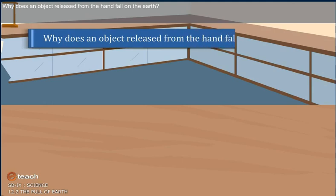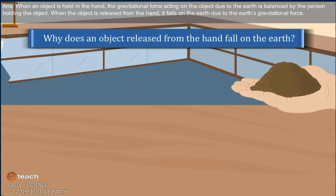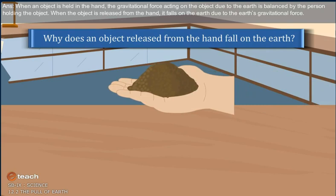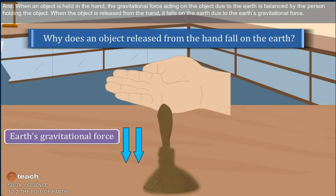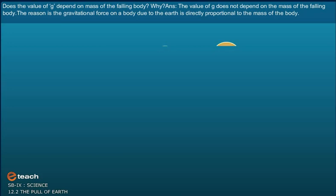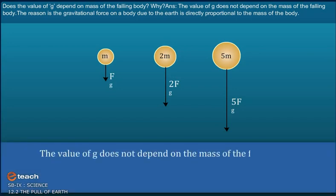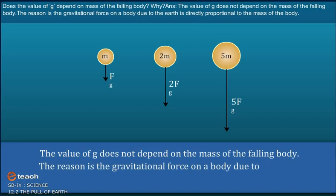Why does an object released from the hand fall on the Earth? When an object is held in the hand, the gravitational force acting on it due to the Earth is balanced by the person holding the object. When the object is released, it falls on the Earth due to the Earth's gravitational force. The value of g does not depend on the mass of the falling body, because the gravitational force on the body due to the Earth is directly proportional to the mass of the body.